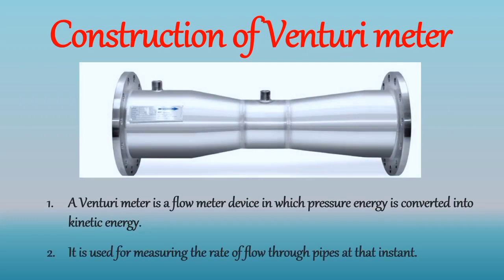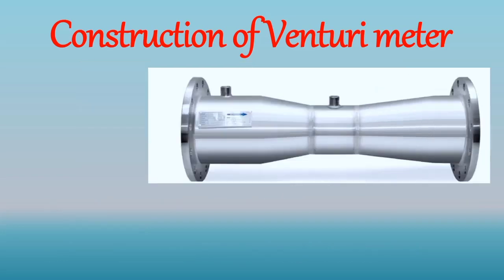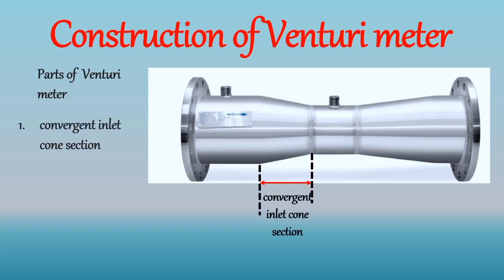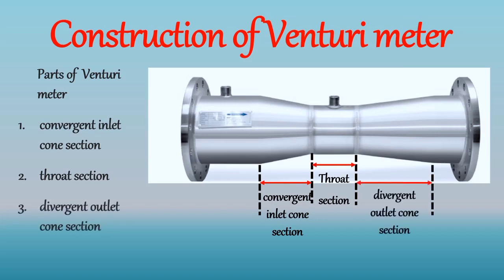Venturimeter is a pipe where two funnels are joined at their smallest ends. The Venturimeter consists of three parts. The first one is the convergent inlet cone section. The area of this section is decreasing. Then the second part is the uniform diameter throat section whose area is constant. And the third part is the divergent outlet cone section. The area of this section is increasing.